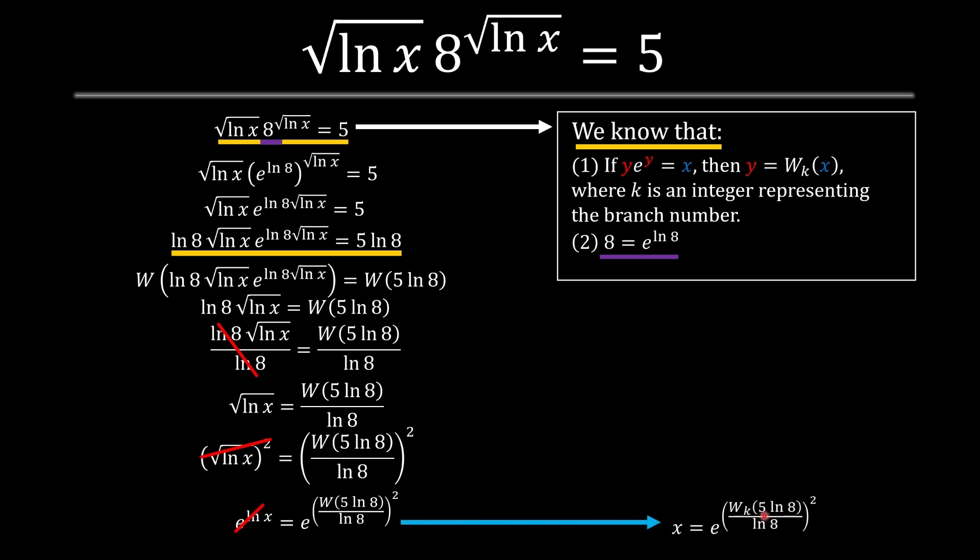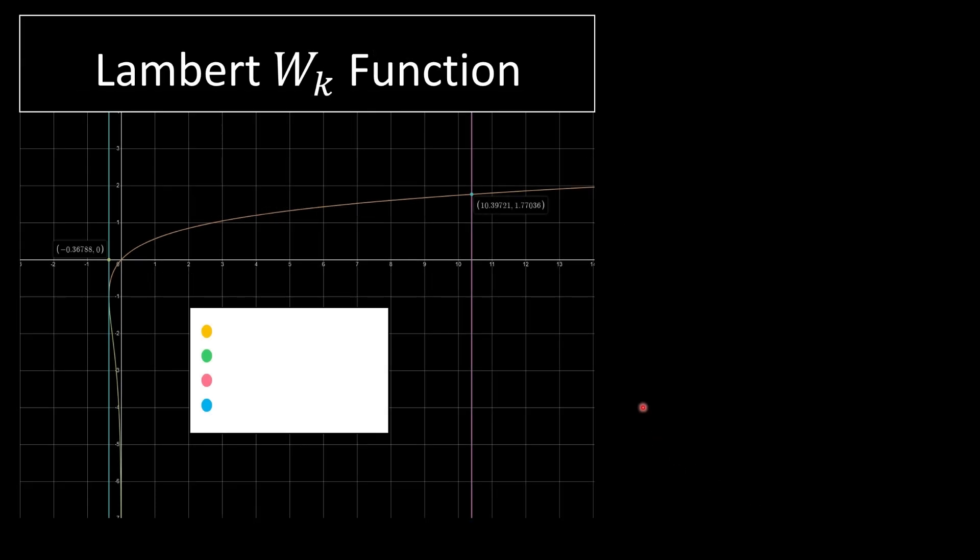Now let's explain the graph. So here's a Lambert W functions graph. The first thing is to see our value over here is 5 multiplied by ln 8 where it's equal to 10.3972. Now, the first step is to understand the branch numbers.